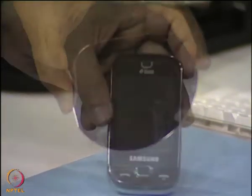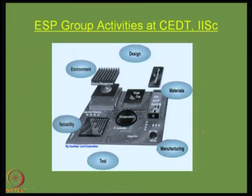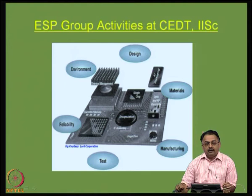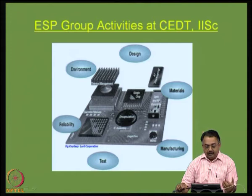We are going to discuss in this course the process from a wafer to a complete system. If you keep this idea in mind, you will be able to understand the flow process of this course. Briefly, I will talk about the electronics packaging group in CEDT, Indian Institute of Science, where we look at a system like the one depicted here — a printed wiring board that performs system-level functions. It can accommodate various packages on its surface. It is a very high-density board.